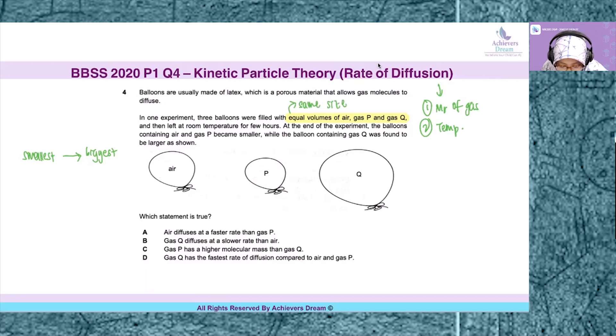And then they are left at room temperature for a few hours. At the end of the experiment, the balloons containing air and gas P became smaller, while the balloon containing gas Q was found to be larger as shown. So there is a diagram that shows the size of the balloon after the experiment.